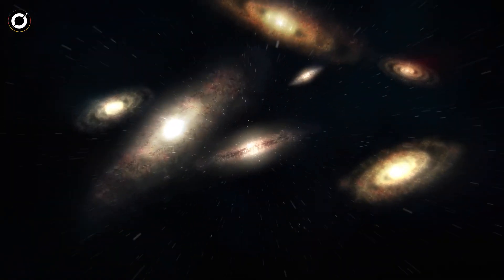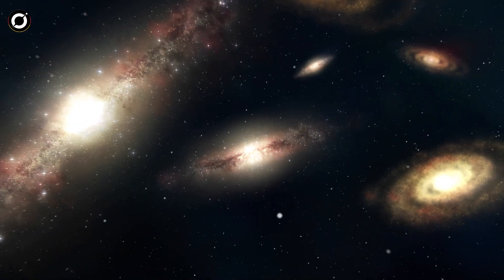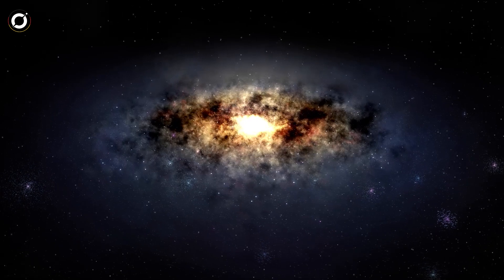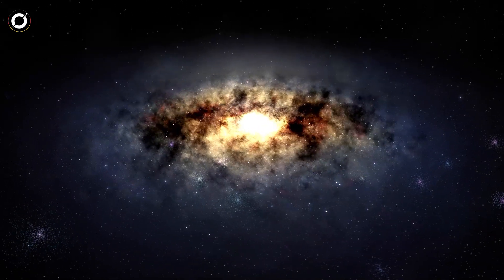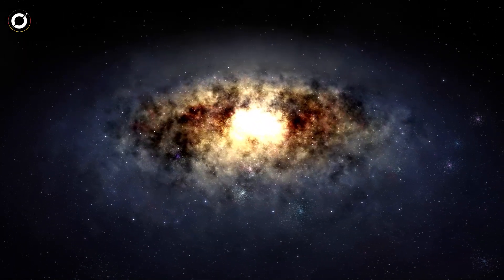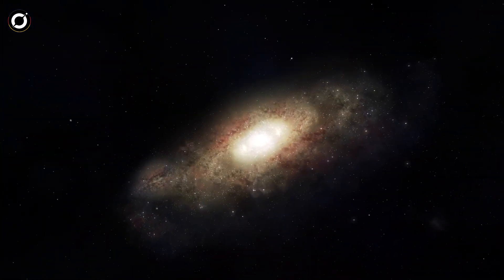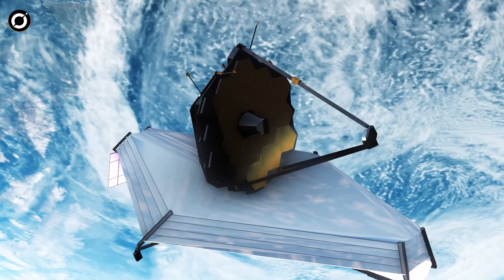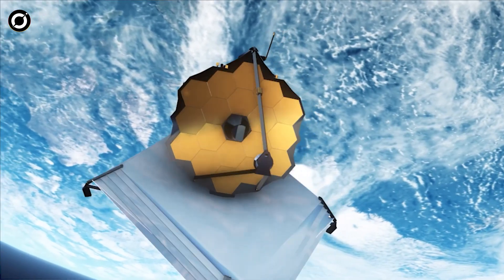Das CERS-Team evaluiert derzeit etwa 10 weitere Systeme, die älter sein könnten als Maisys Galaxie. Es scheint, je mehr Galaxien wir betrachten, desto mehr jüngere finden wir, immer näher am Urknall, als wir es uns noch vor ein paar Jahren hätten vorstellen können. James Webb hat diese Entdeckungen möglich gemacht.